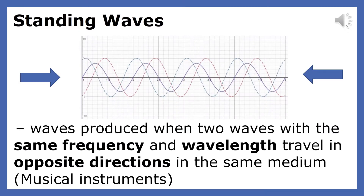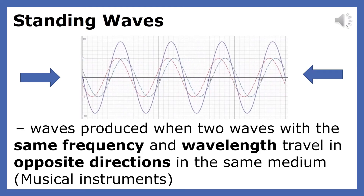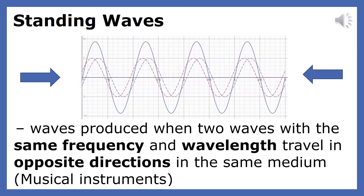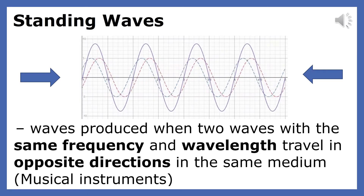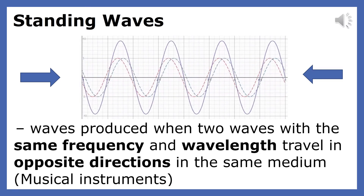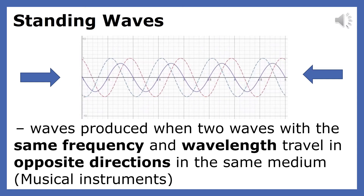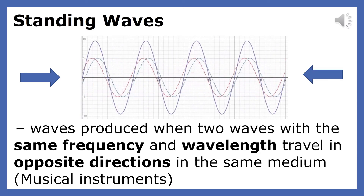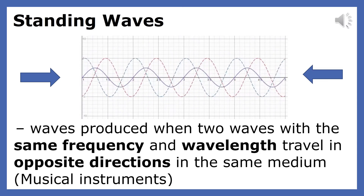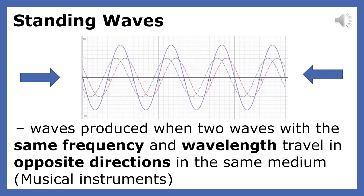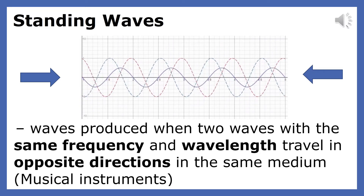Standing waves are waves produced when two waves with the same frequency and wavelength travel in opposite directions in the same medium. The dotted waves represent the two waves that make up the standing wave. They are called standing waves because the resultant wave appears as if it is neither moving to the left or the right. Musical instruments create these kinds of waves.